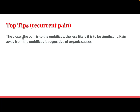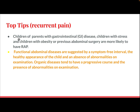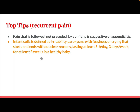Top tips for recurrent or chronic pain: The closer the pain to the umbilicus, the less likely it is to be significant. Pain away from the umbilicus is suggestive of organic causes. Children of parents with GI disease, children with stress, and children with obesity or previous abdominal surgery are more likely to have recurrent abdominal pain. Functional abdominal diseases are suggested by symptom-free intervals, healthy appearance of the child, and absence of abnormality on examination. Organic diseases tend to have a progressive course with abnormality on examination. Pain that follows, not precedes, vomiting is suggestive of appendicitis.